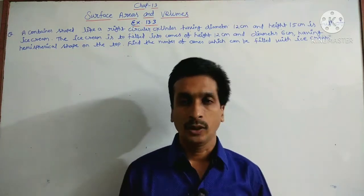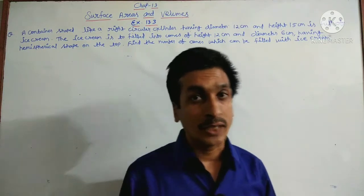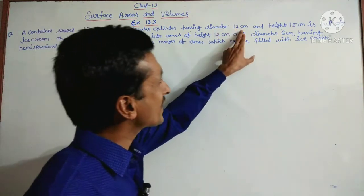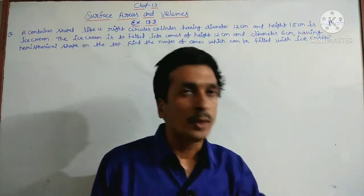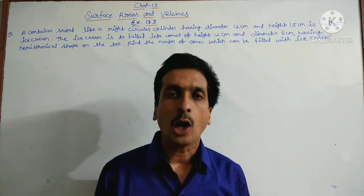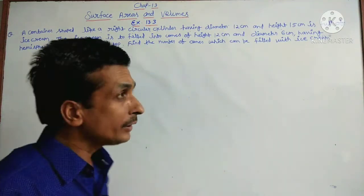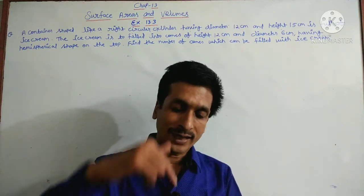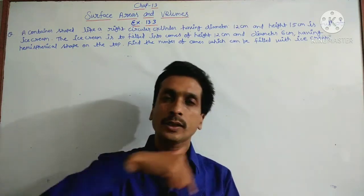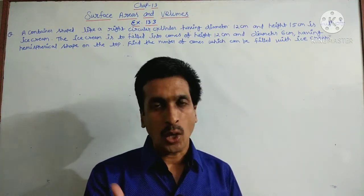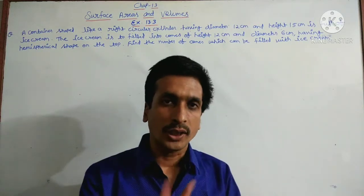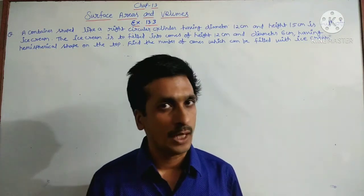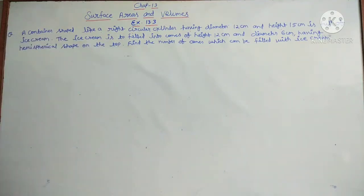We have a container of cylindrical shape with given height and radius. First we will find out the volume of the cylinder — that means how much ice cream you have. Then you fill cones where the upper side is hemispherical and the inside is the cone part. So you have to find the volume of cone plus volume of hemisphere.